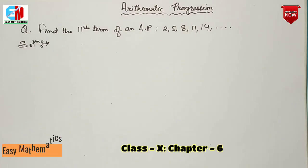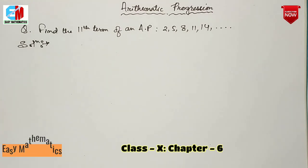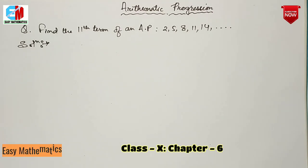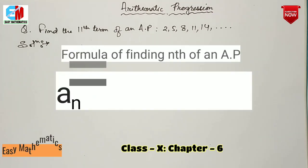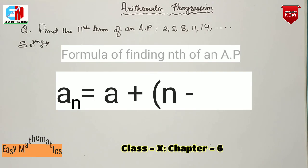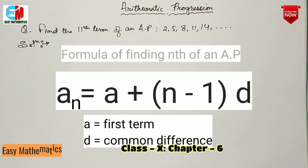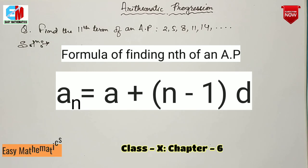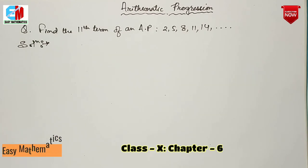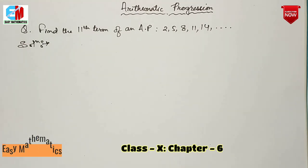In this video, I'm going to talk to you about the sequence and the same calculation. The formula is: An is equal to a plus n minus 1 times d, where a is the first term and d is the common difference.